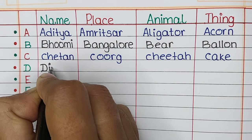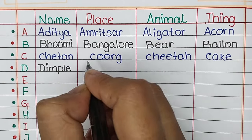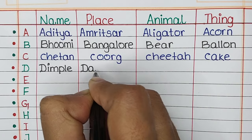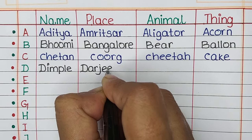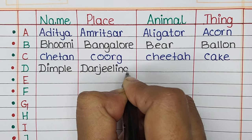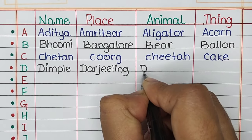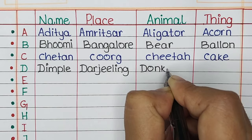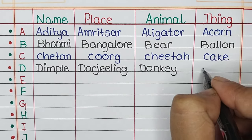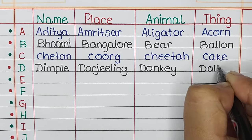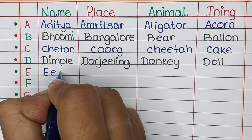Next is letter D. The name is Dimple, the place is Dazzling, the animal is Donkey. Next is letter E.